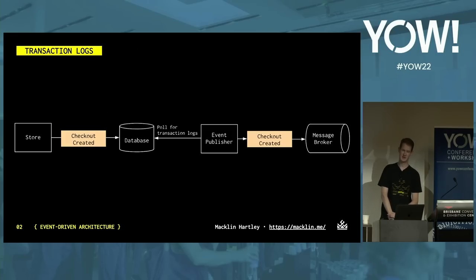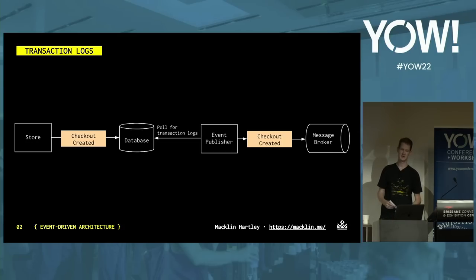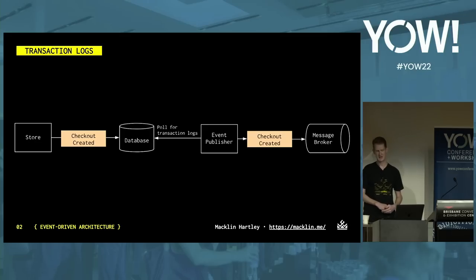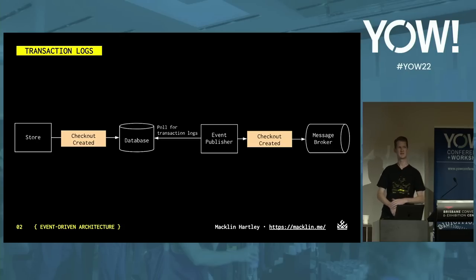Transaction logs are a feature offered by most databases. They're created whenever inserts, updates, or deletes occur on the database automatically. An event publisher could then poll these database logs and translate these changes into events before sending them to the message broker. The downside here is that we're using low-level database logs, which gives us a coupling to the database technology we're using instead of something more high-level like business events.